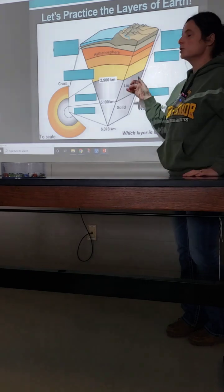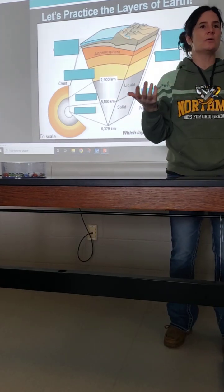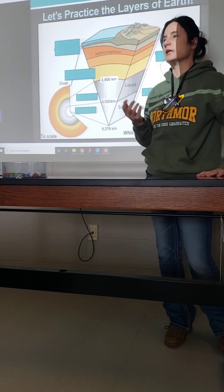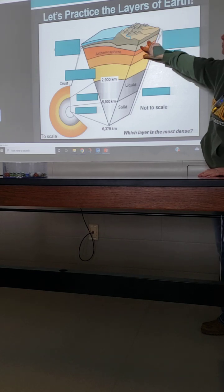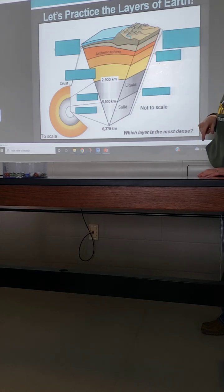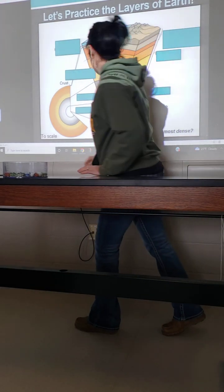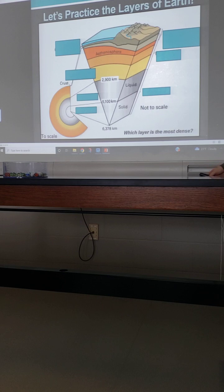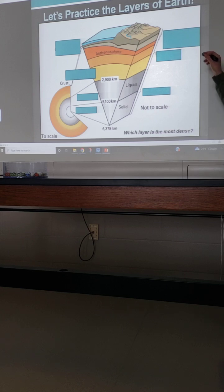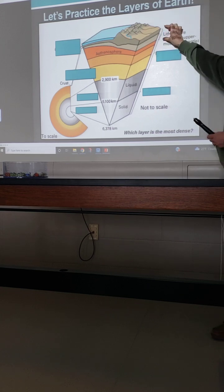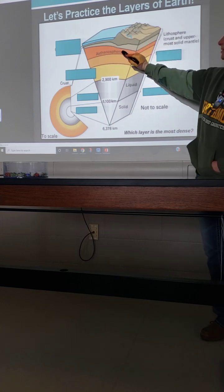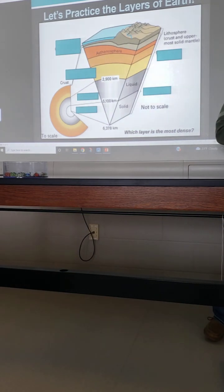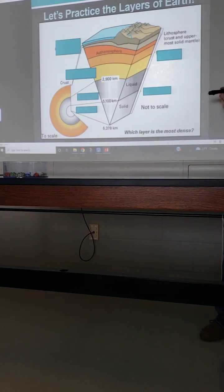All right. So we're just going to take another look. Sometimes the diagram, I mean, it's always all the same layers, but sometimes the diagram just looks slightly different. So it's good to see a variety. So if we are looking here at the portion that includes the uppermost mantle and either the oceanic or the continental crust, what is that layer called? The lithosphere. Good.